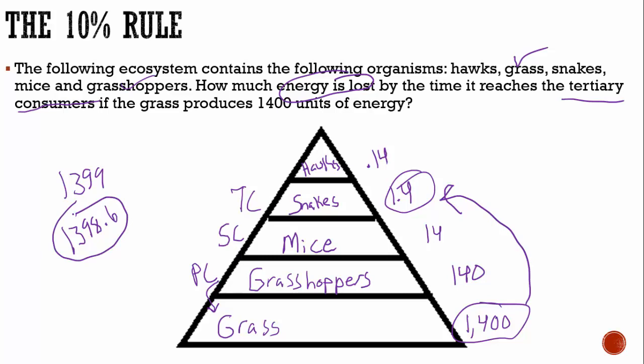That looks complex but it's really not. Using a little common sense, we can figure out the ecological pyramid. There's no math involved to figure out the numbers themselves — just a little subtraction at the end. If you use a calculator, I strongly advise you enter it twice just to make sure you get the same answer, in case you miss a decimal point.